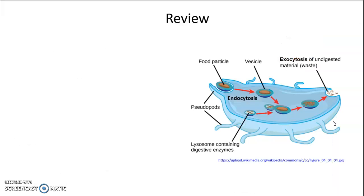This diagram shows both endocytosis and exocytosis happening in a cell as it takes in food particles in a vesicle, uses a lysosome to digest them, and then releases waste via exocytosis. It's worth noting that your own cells don't do this in quite the same way — because you have a whole digestive system, your individual cells don't need to take in food via endocytosis this way. But this is how a protist or similar creature might take in and process food and get rid of waste.